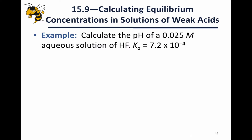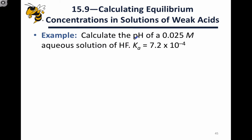Let's calculate the pH of a 0.025 molar aqueous solution of HF. This may seem like a fairly concise problem statement, but it contains all the information we need to calculate the pH. Our goal is to find the pH — specifically an equilibrium pH. The fact that HF is not a strong acid and is not on our list of strong acids tells us that we're looking at an equilibrium problem here.